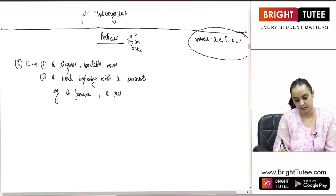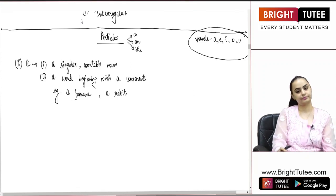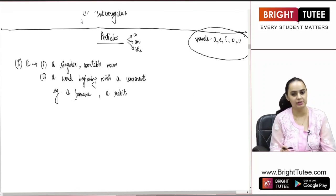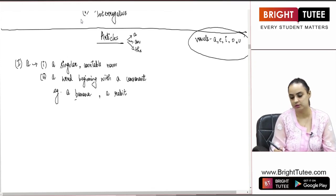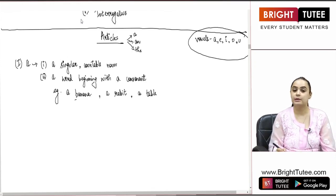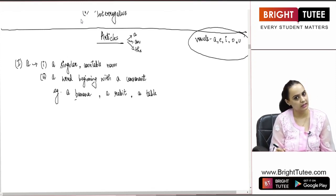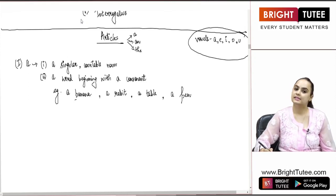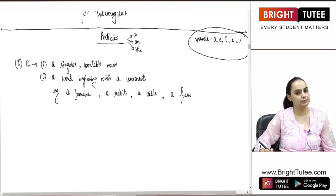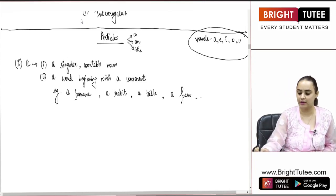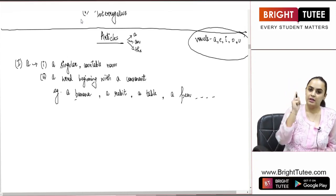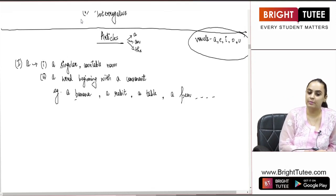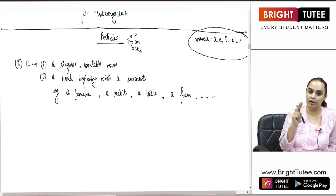A rabbit — again singular, countable, and beginning with a consonant. A table — singular, countable, beginning with a consonant. A pen — again singular, countable, beginning with a consonant, and so on. So the first and foremost thing to remember is that 'A' is used before a noun which is singular, countable, and begins with a consonant sound.